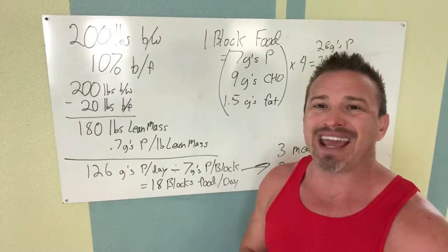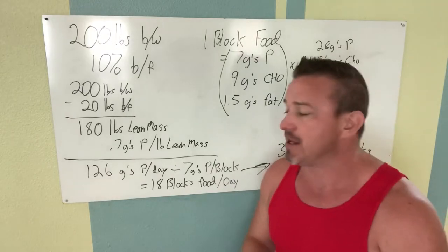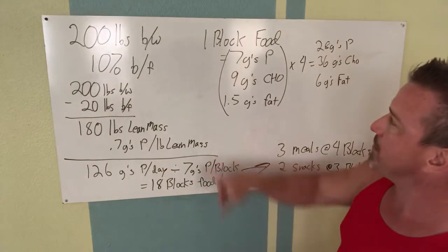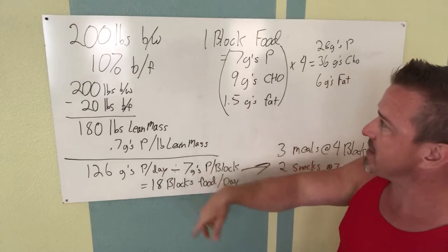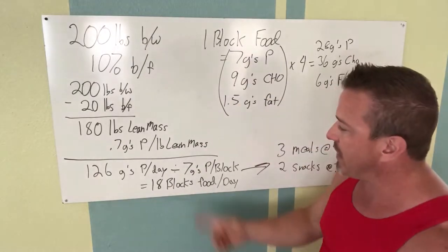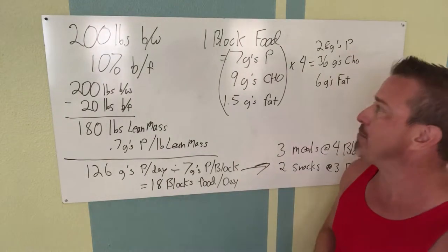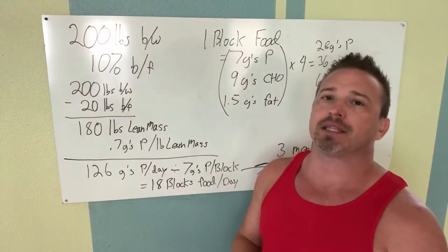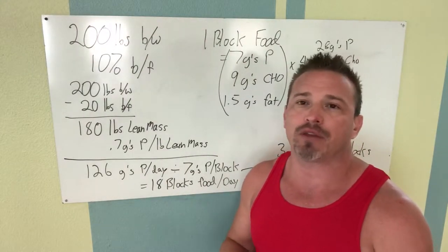So the 126 divided by seven comes to about 18. So now I know I need 18 blocks of food per day. The 18 would be multiplied by seven which is 126, 18 times nine, and then of course 18 times 1.5, which would be 27 grams of fat per day. Those numbers make sense based on that 40 carbohydrate, 30 protein, 30 percent fat model.